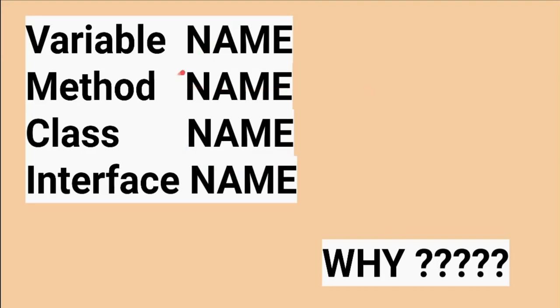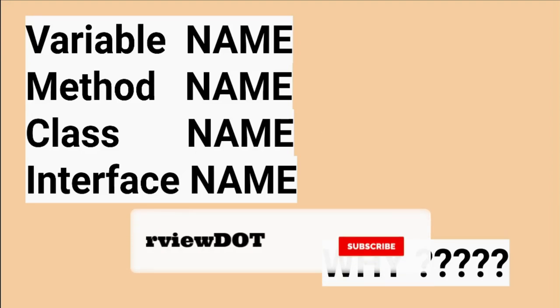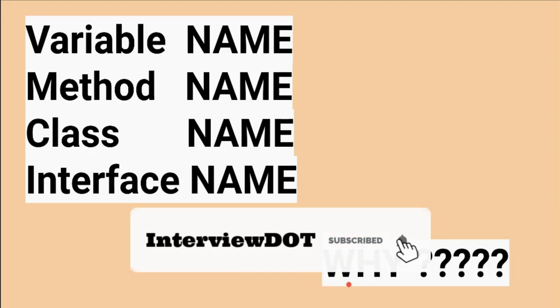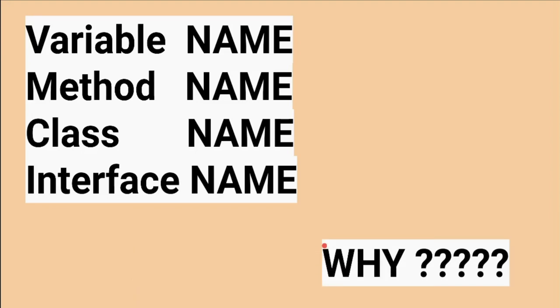When writing or reviewing code, please ask questions like: why is the variable name like this? Why are the method name, class name, and interface name like this? Am I able to understand the variable name and method name? Am I able to understand the business logic? Because it's not only you who will maintain the code — many people will, and whenever a new feature change comes, it should be possible to search within the project and add it effectively. Please ask 'why' questions, especially for naming.